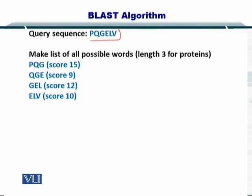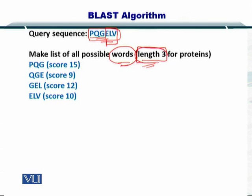So if this is your sequence, then you can have PQG — a word of length 3 — or QGE, or GEL, or ELV. So you can make words of length 3. I have listed down PQG, QGE, GEL, and ELV — those are the four words that could be formed by looking at this sequence.